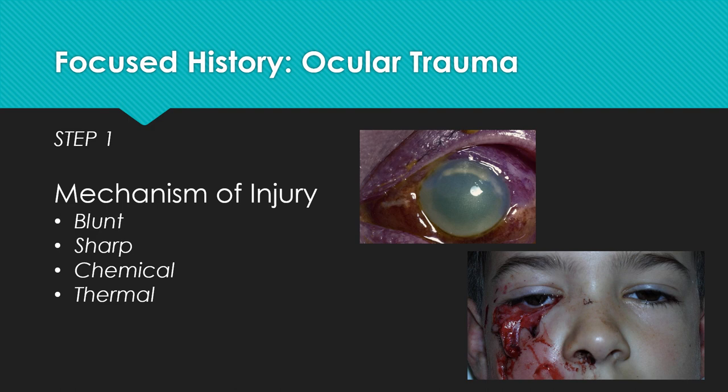After ruling out globe rupture, one can start the focused history in relation to eye trauma. One of the first steps is determining how the eye was injured, or the mechanism of injury. The mechanism is important because different types of injuries require different types of management. Some different mechanisms include blunt injury, sharp injury including metalworking, chemical injuries such as with alkalotic or acidotic solutions, and thermal injury.